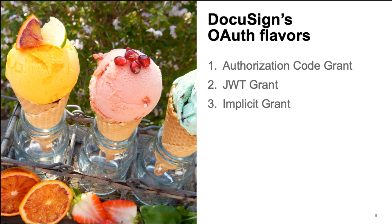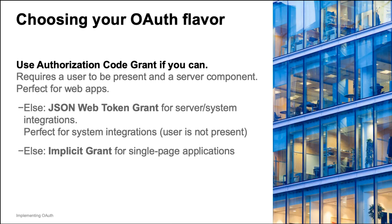DocuSign supports three OAuth flows: Authorization Code Grant, JWT Grant, and Implicit Grant. The best OAuth flow to use is Authorization Code Grant. It is the easiest for the user and provides the best information security and security options.